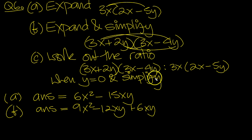And then the last, plus times minus is a minus. 2 times 4 is 8y-squared. So what have we got? We've got 9x-squared. Minus 12 plus 6 is minus 6 lots of xy. Minus 8y-squared. So there's part B.